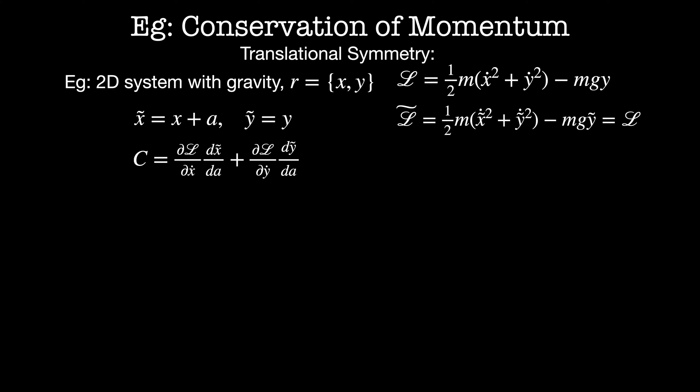Then the conserved quantity here is dl by dx dot times dx tilde by da plus dl by dy dot times dy tilde by da. The second term here is zero because it doesn't depend on a. The first term I get m x dot times dx tilde by da which is equal to one. That gives me m x dot. So my conserved quantity is momentum in the x direction. That's a really powerful statement because it relates the symmetry of my space to the actual physical quantities in the system.